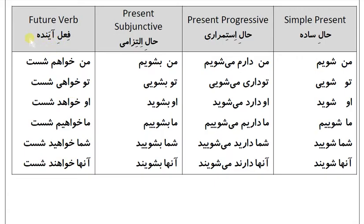فعل آینده (Future tense): من خواهم شست، تو خواهی شست، او خواهد شست، ما خواهیم شست، شما خواهید شست، آن‌ها خواهند شست.